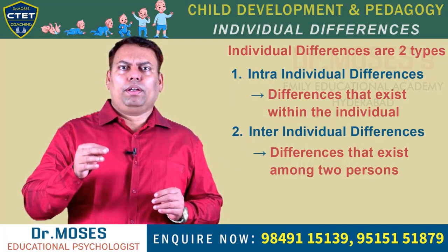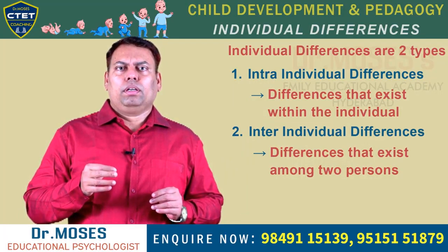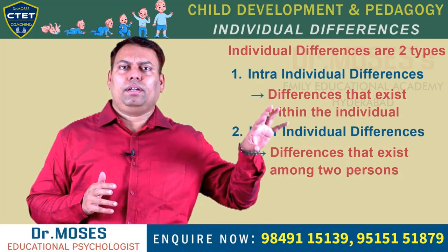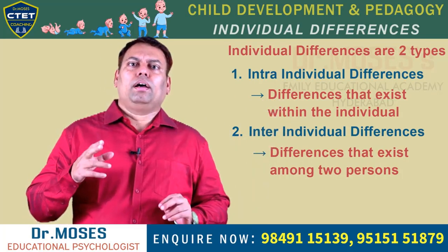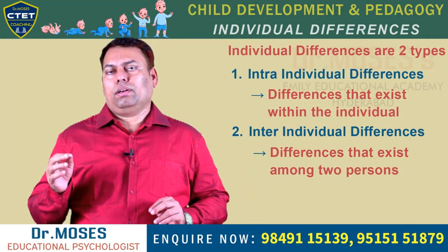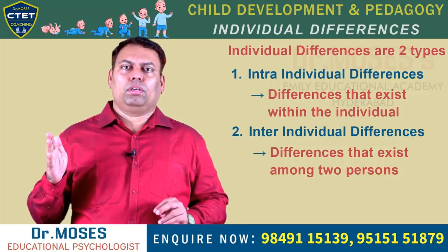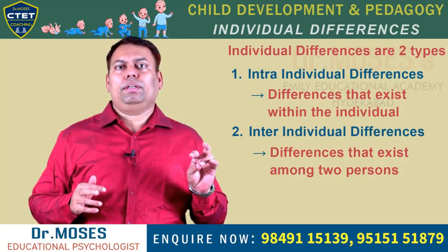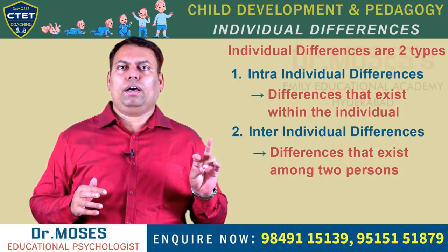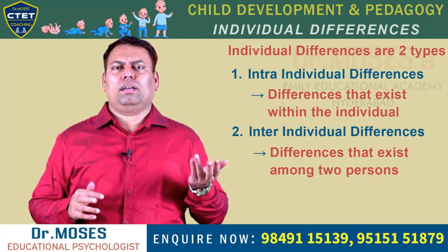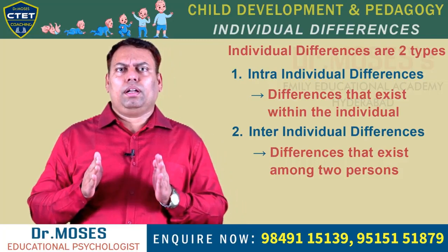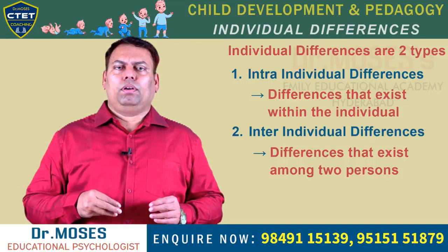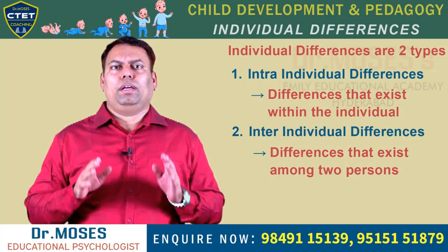Sometimes a question is asked like this: a student has an IQ of 140 but is poor in creativity — what type of difference is this? The answer is intra-individual difference. Similarly, Rena is good at writing but poor in communication skills. The answer is option number one: intra-individual differences. In simple terms, variations within oneself, or differences that exist within the individual, are called intra-individual differences.